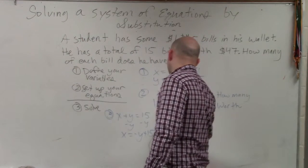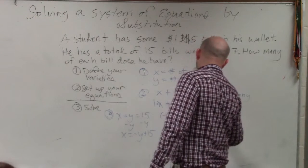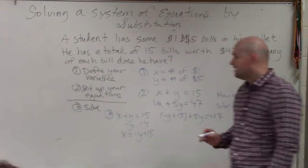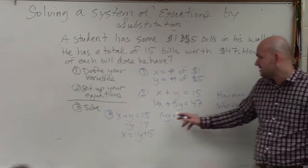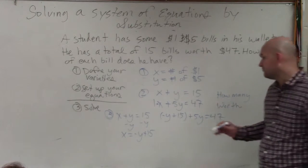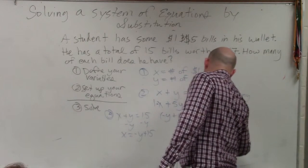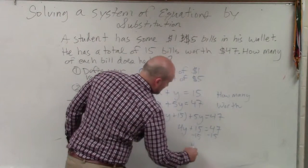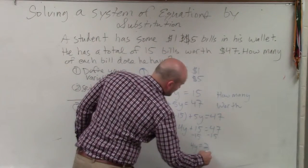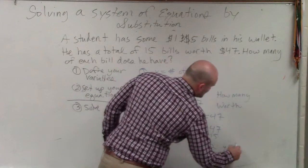So when plugging that in, I get negative y plus 15 plus 5y equals 47. I'm not really multiplying anything by my x, so I don't really need the parentheses. So negative y plus 5y is 4y. So I have 4y plus 15 equals 47. Subtract 15, subtract 15, 4y equals 32. Divide by 4, divide by 4, y equals 8.